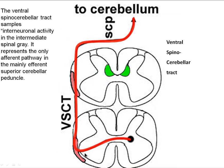Here's another simplified drawing of the ventral spinal cerebellar tract showing how it comes out, samples interneuronal activity, crosses the midline, piles up, finds the superior cerebellar peduncle, crosses the midline again, and goes into the cerebellum.